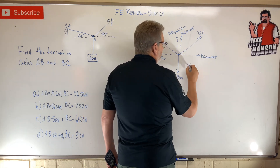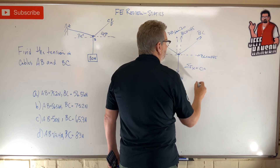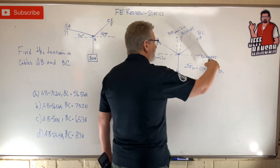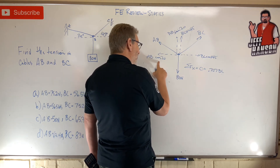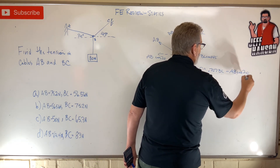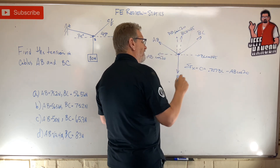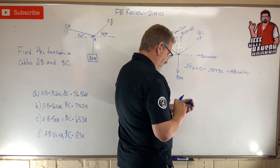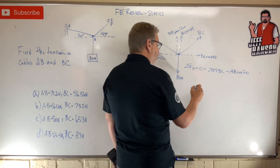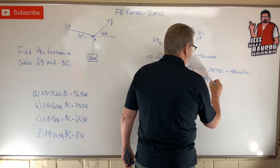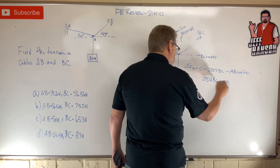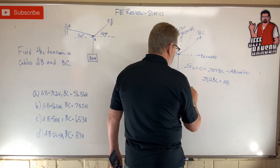Sum of forces in X equals zero. I've got 0.707 BC — done that about a million times — minus AB cos20 equals zero. Move AB to the other side and divide: 0.707 divided by cos20 equals 0.752. So AB equals 0.752 BC — there's a relationship between BC and AB.